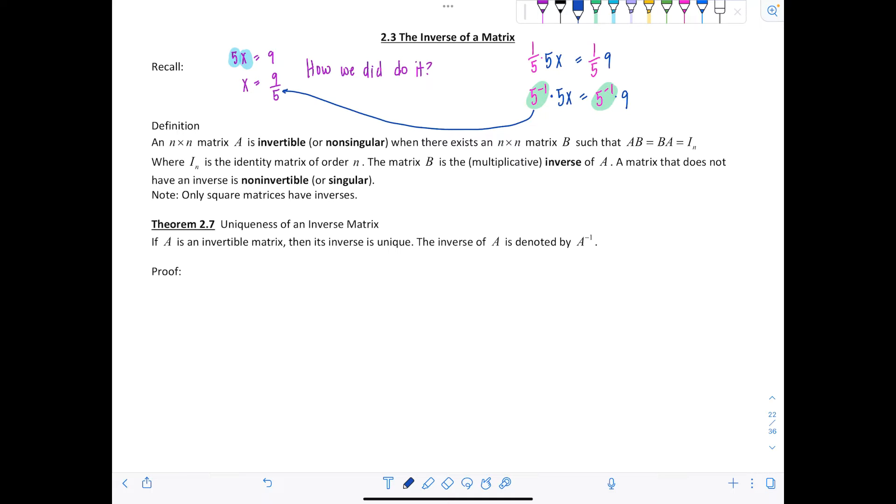So we're going to apply the same idea. We say that an n by n matrix A is invertible or non-singular when there exists an n by n matrix B such that the product AB is equal to BA, which is equal to the identity matrix of size n by n. Now the matrix B is the multiplicative inverse of A.